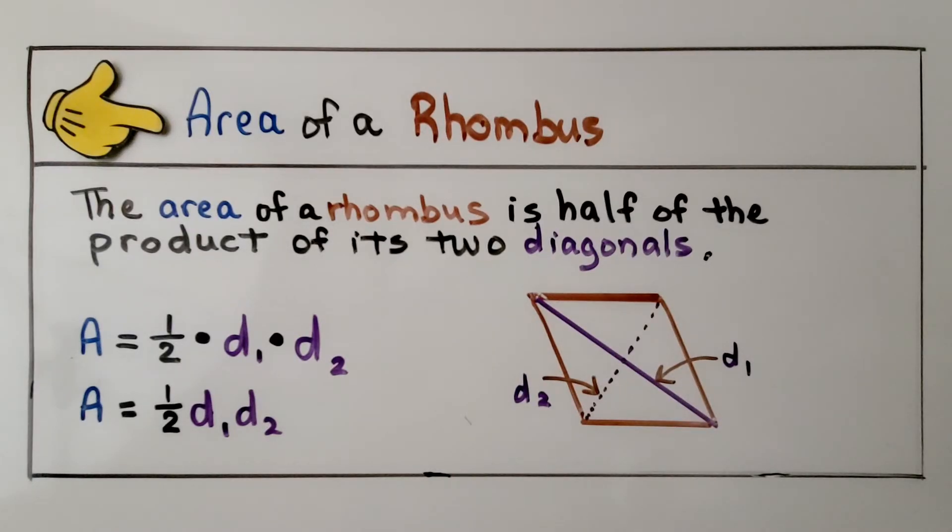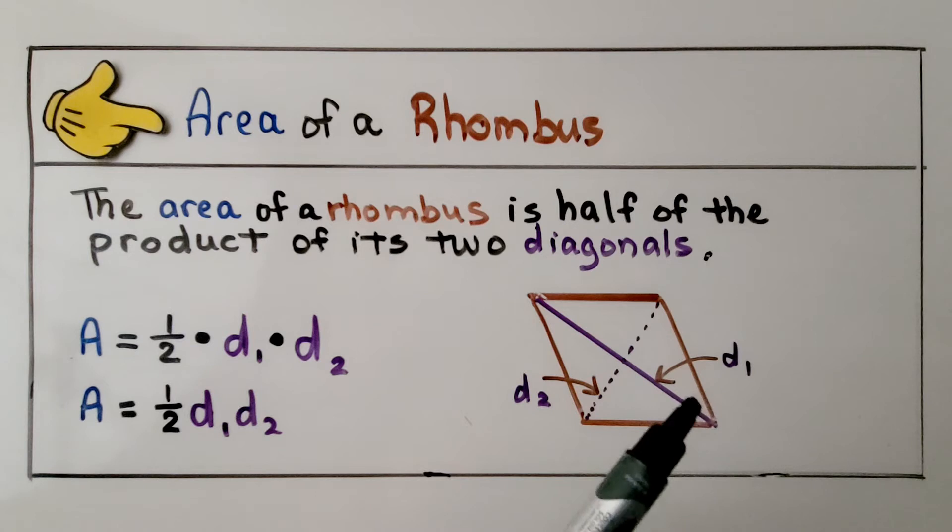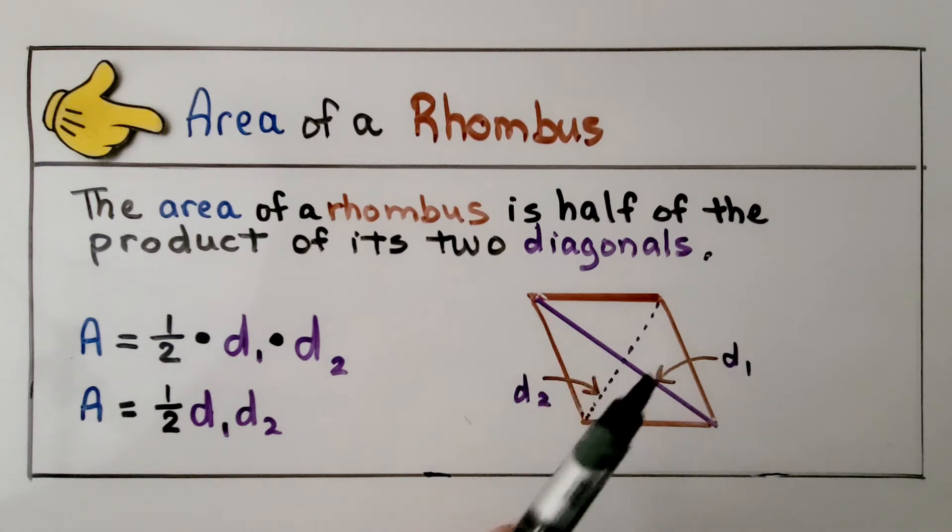So for your notes, the area of a rhombus is half of the product of its two diagonals. We take the length of one diagonal, the length of another diagonal, and we multiply that by half, and we get the area for inside of the rhombus.